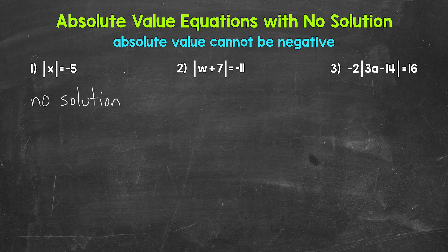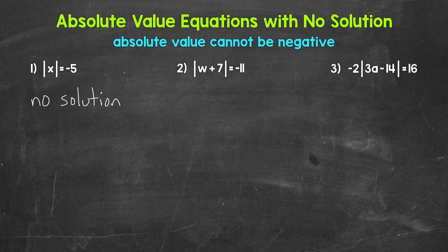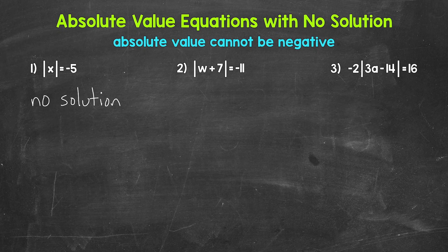Let's move on to number two and take a look at another example. We have the absolute value of w plus seven equals negative 11. So again, for this one, we have the absolute value and it equals a negative. There's no way to make this equal negative 11.